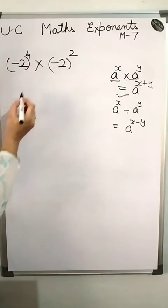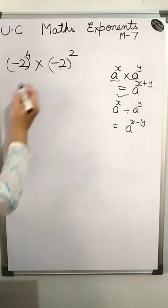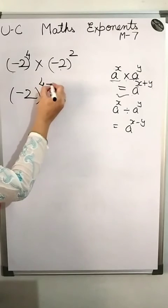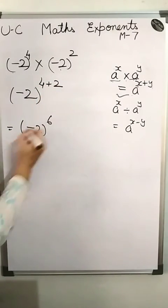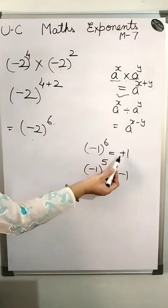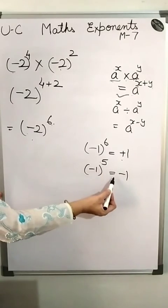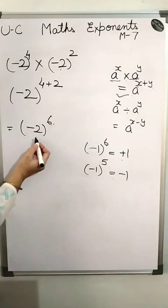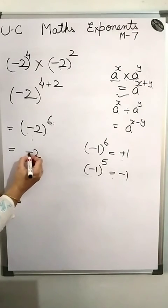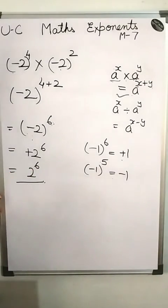The next question is (−2) to the power 4 multiplied by (−2) to the power 2. The bases are the same and the numbers are in multiplication, so we apply the same formula and add the powers to get (−2) to the power 6. Now, whenever a negative number has an even power, the answer is a positive number; whenever it has an odd power, the result is negative. Here the power 6 is even, so in place of (−2) to the power 6 we write 2 to the power 6. Thank you everyone.